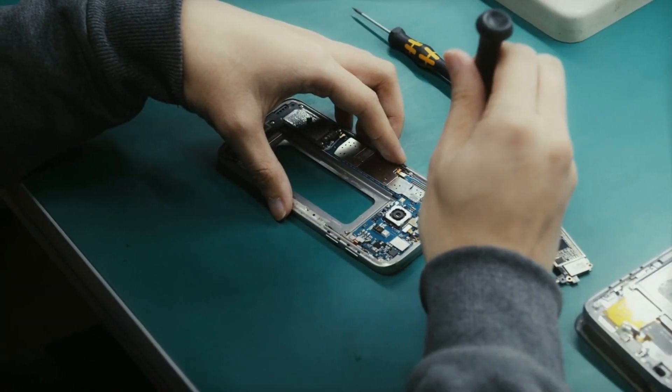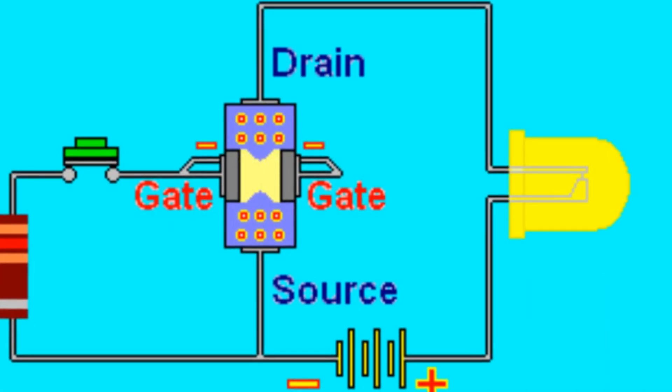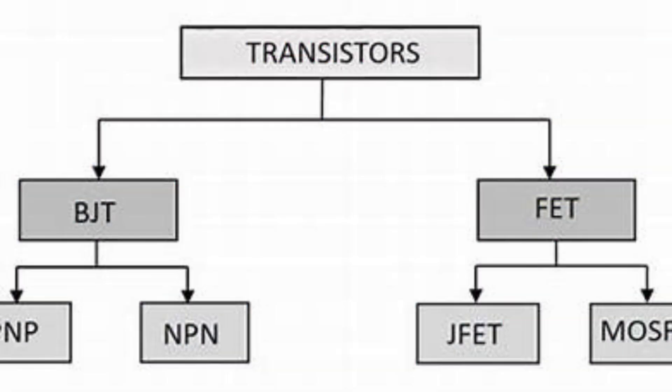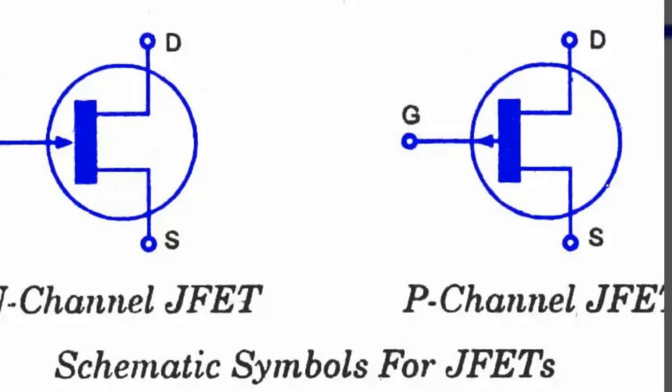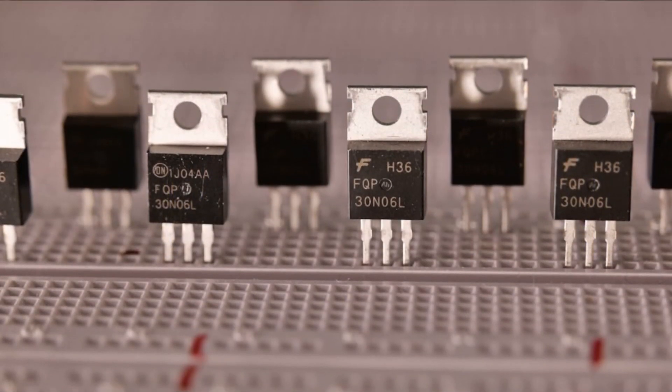So, to sum it up, transistors are the fundamental building blocks of modern electronics. They control the flow of electricity, acting as a switch or an amplifier. With three main types, the bipolar junction, field effect, and the junction gate field effect transistors, each has unique capabilities.